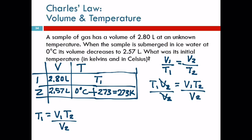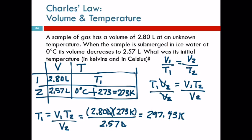Especially on an exam, take a second and make sure you copied it right. Then I'm going to plug in my numbers. Volume 1 was 2.80 liters. Temperature 2 was 273 Kelvin. Volume 2 was 2.57 liters. The liters cancel out. 2.8 times 273 divided by 2.57. 297.43 Kelvin. Three significant figures.